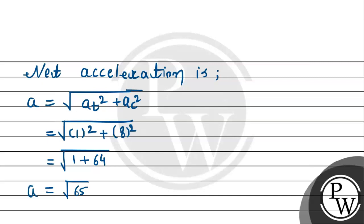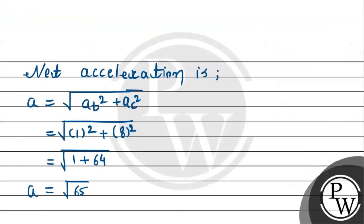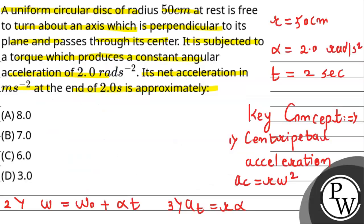But according to given options, we have to approximate. So obviously approximately it will be 8 meter per second square. And therefore, this is going to be the required answer to this question as per the given option. Option A will be correct.